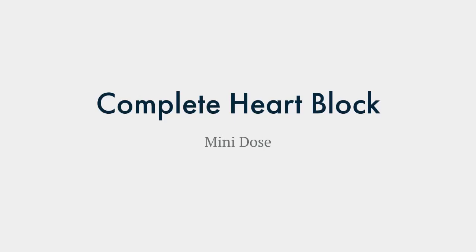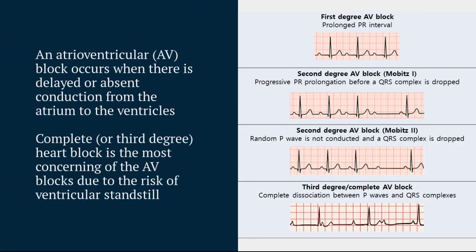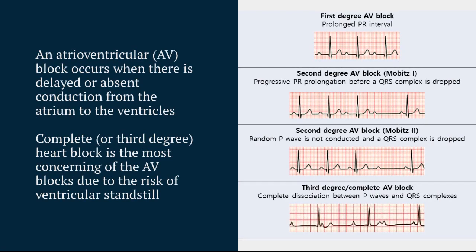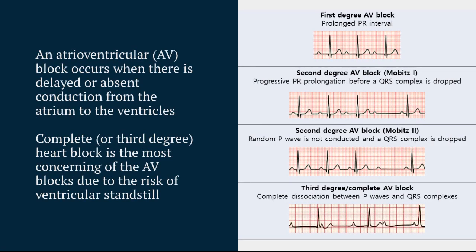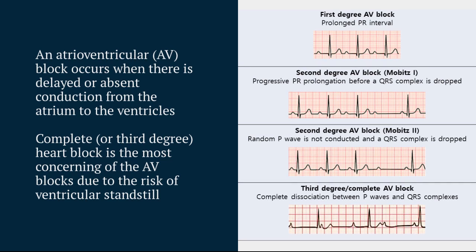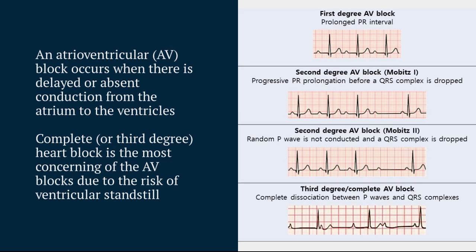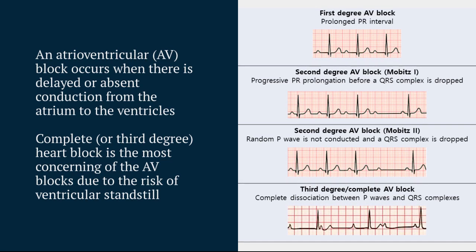Hello and welcome to this episode on complete heart block. Taking a step back to start, an atrioventricular block or AV block occurs due to conduction pathology between the atria and ventricles. Impulses will either be delayed or in some cases completely absent. We're going to be focusing on complete heart block or third degree heart block, which is the most severe of the AV blocks.